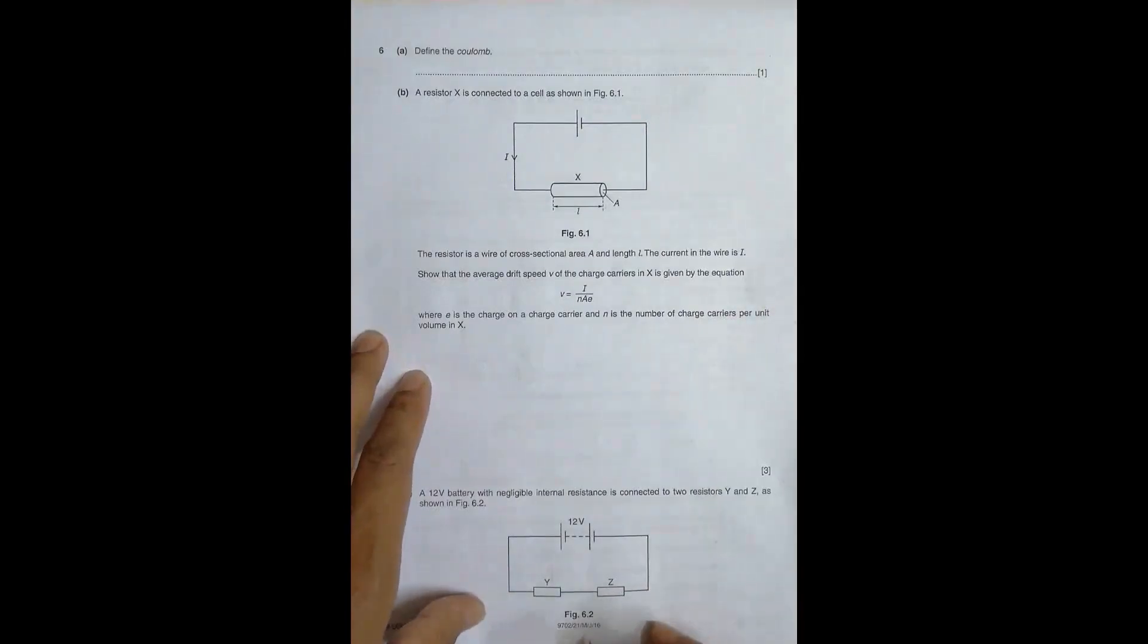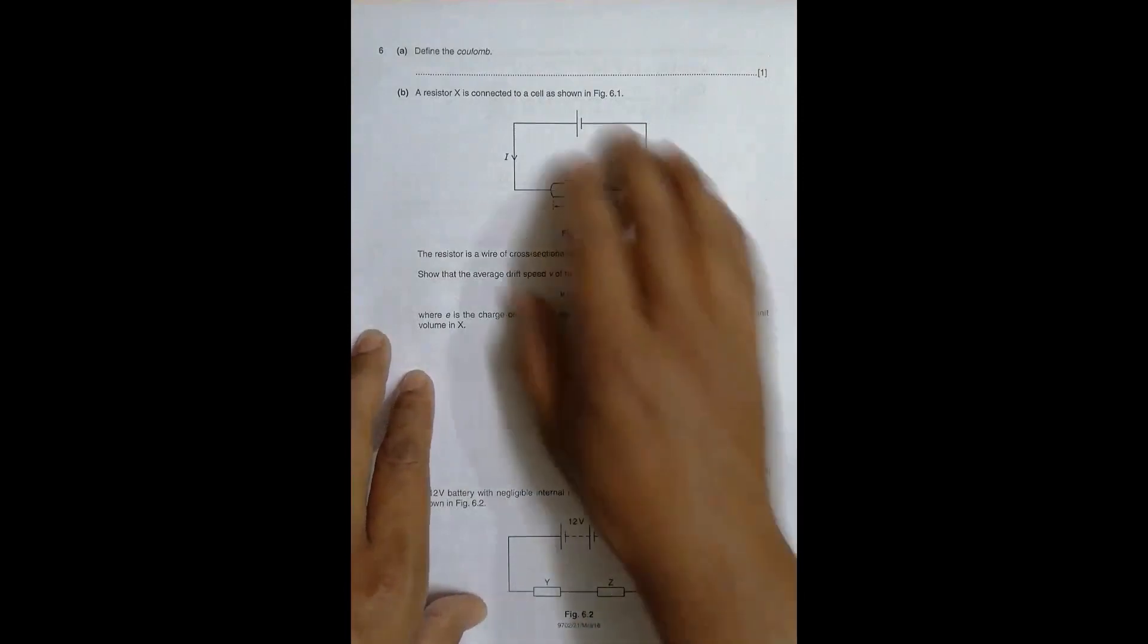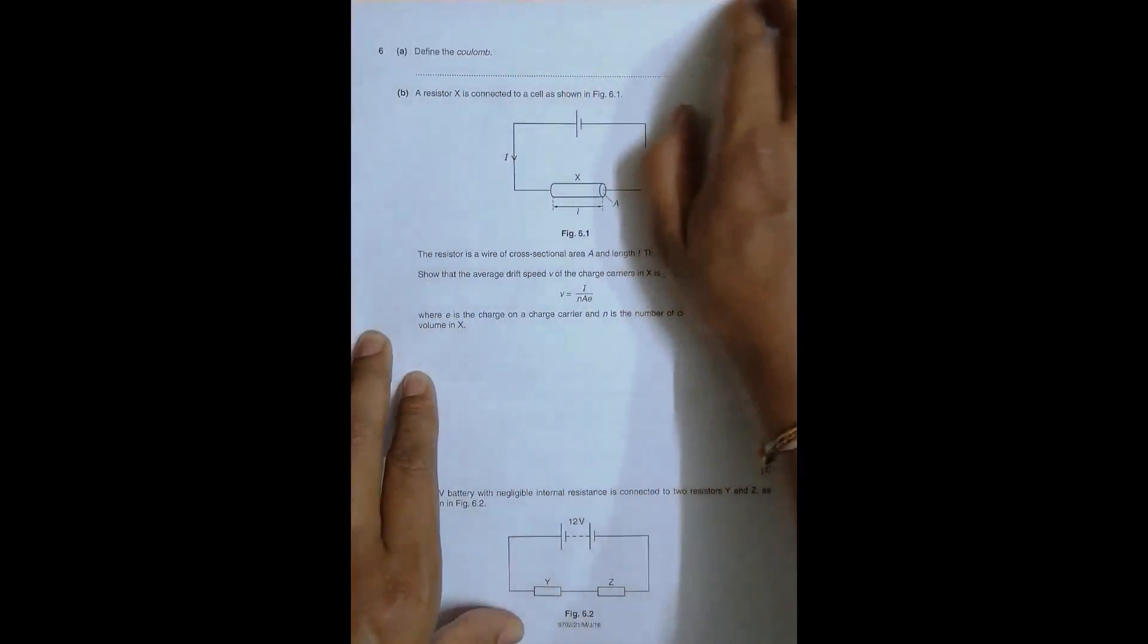Hello folks, this is 2016 May-June paper 2-1 and the question number is 6. It is again concerned with current electricity.